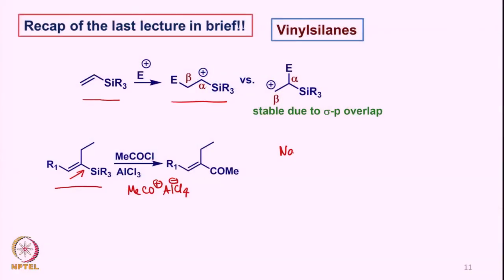We also saw the Nazarov cyclization, where the regiochemistry of cyclization is basically dictated by the silicon group. We saw various aspects of vinylsilane chemistry, and of course intramolecular cyclizations also take place where the double bond holding the silicon allows cyclization to take place from the same carbon as the carbon that holds the silicon.